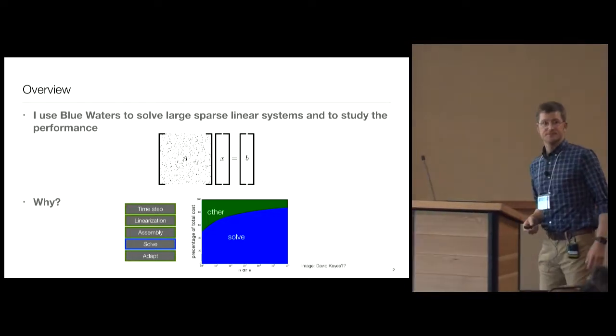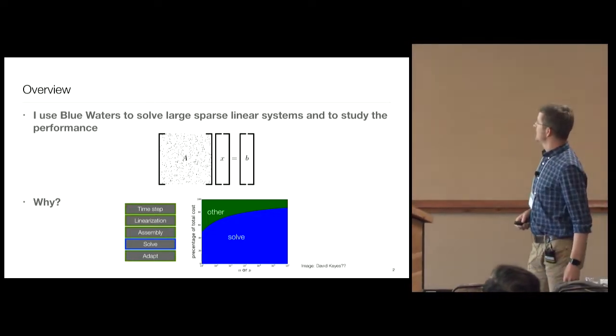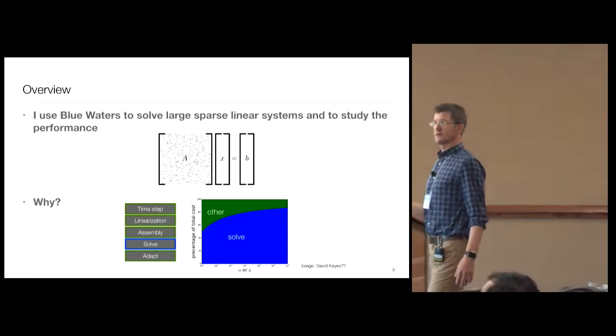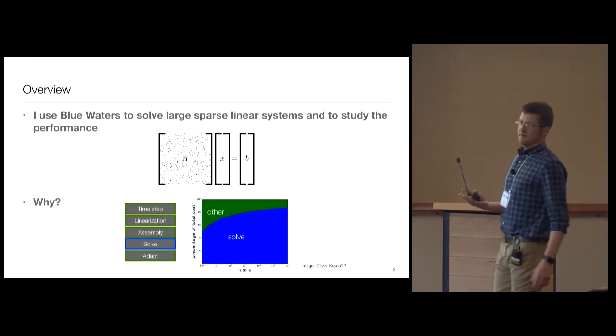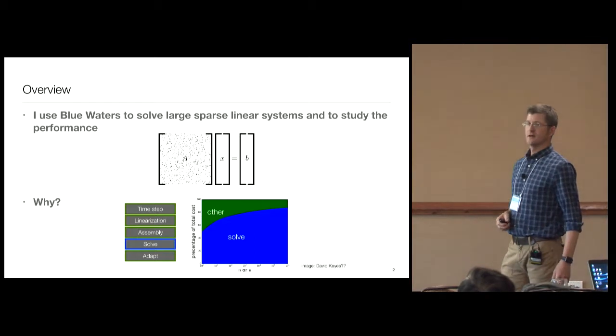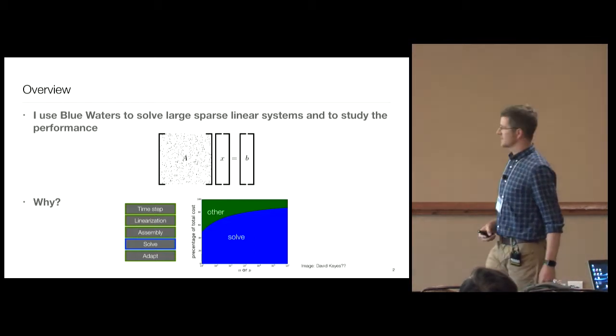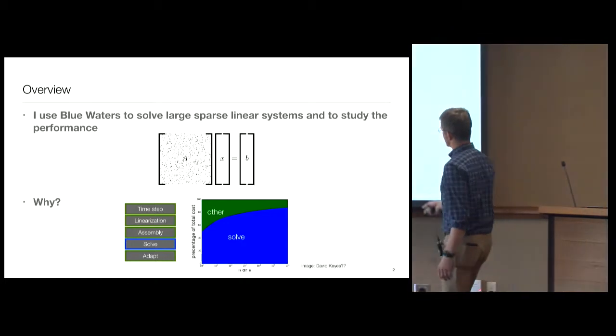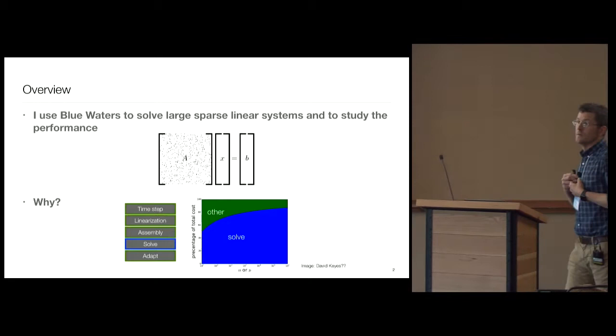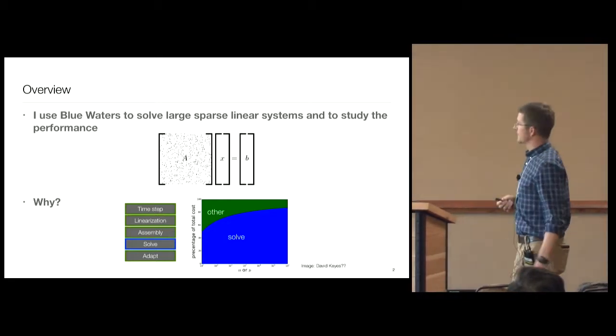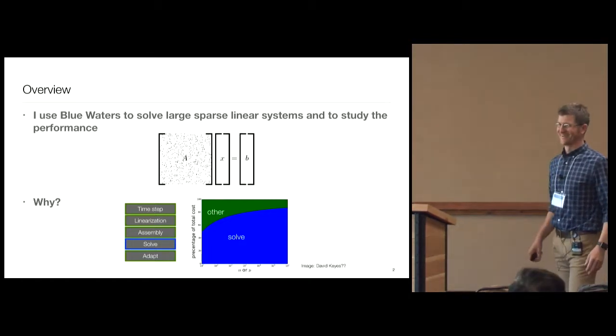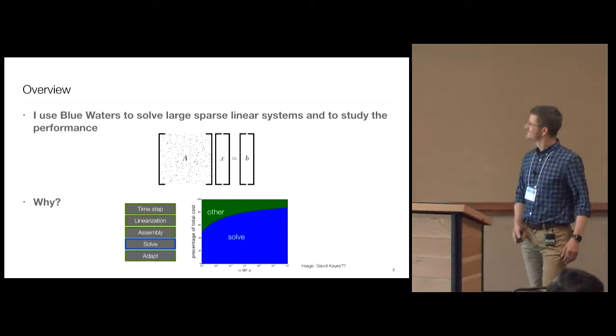I use Blue Waters to solve large sparse linear systems and to study the performance of AX equals B, so matrix A, vector X, vector B. Why are we doing this? Because a sparse solve really dominates simulations in many cases. Here's just a schematic. As we increase N and as we increase P, the solver cost can really dominate. I think this image is attributed to David. I've been using it for a really long time and haven't put your name on there. Now it is.